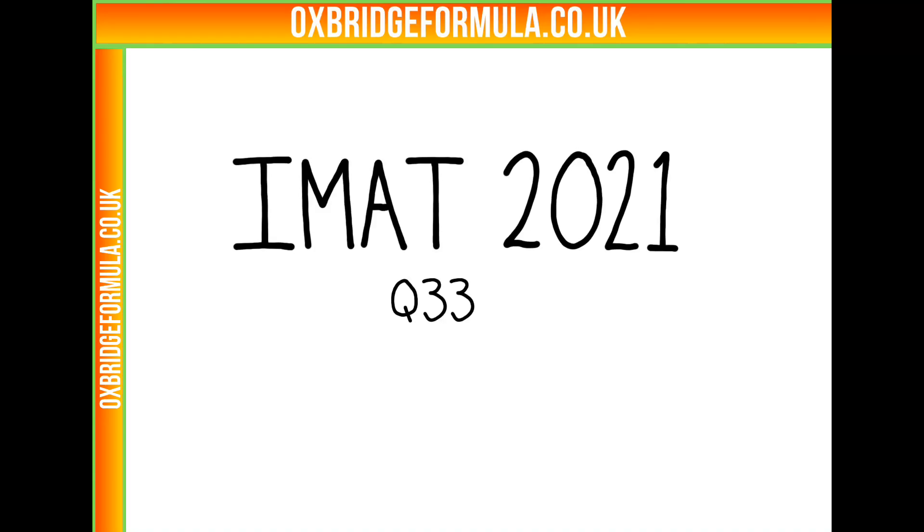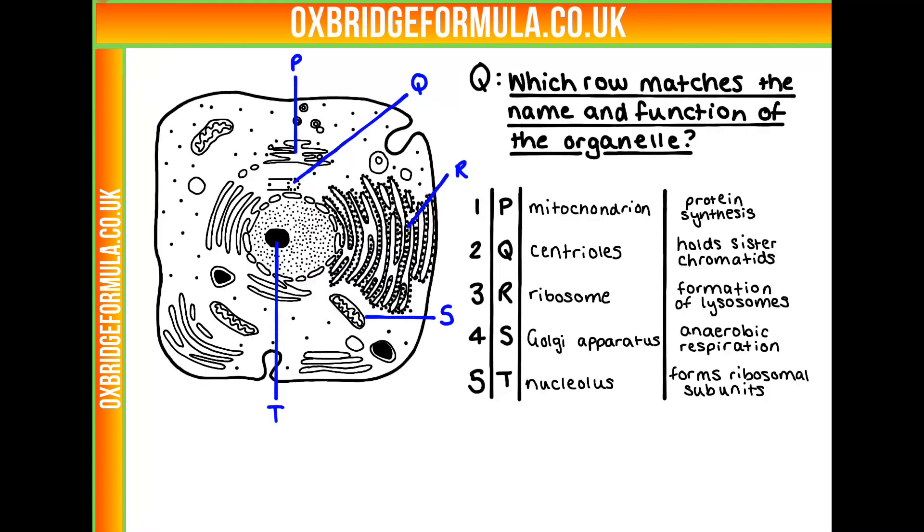This is IMAT 2021, question 33. Here we have a cell which is labelled with different letters. We have to work out which row in this table matches the name and the function of the organelle to each label.